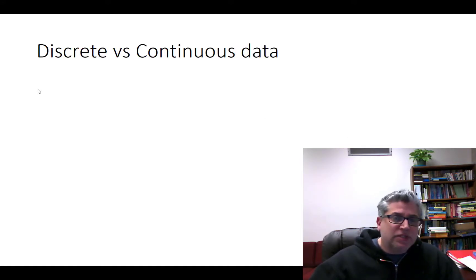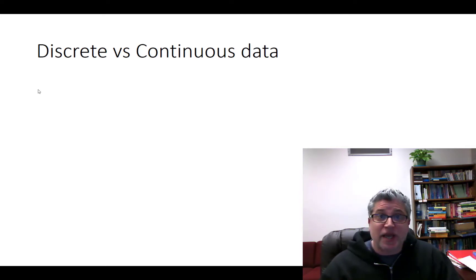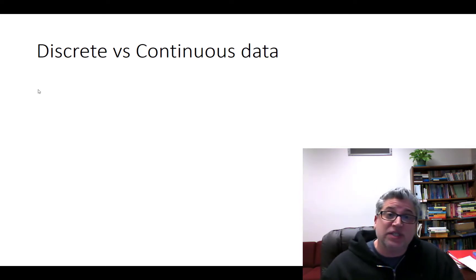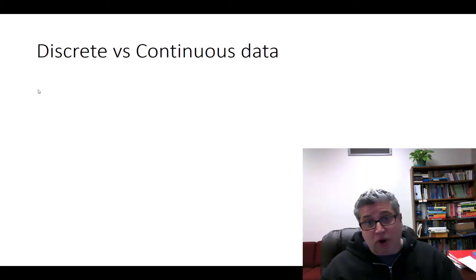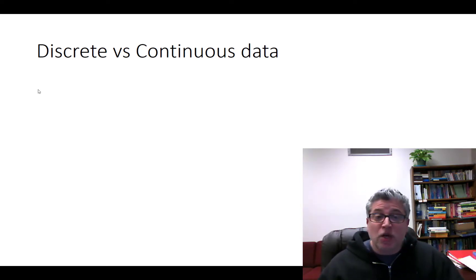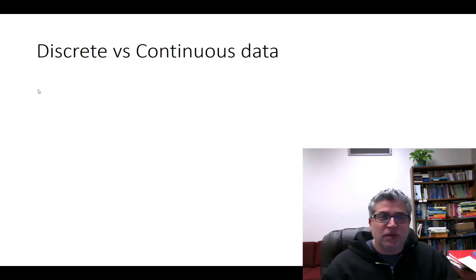What it boils down to is the difference between discrete and continuous data. For discrete data, we're going to be doing bar charts. And for continuous data, we're going to be doing histograms. That's the general difference.